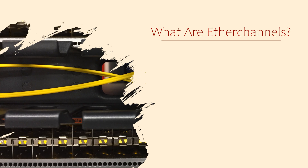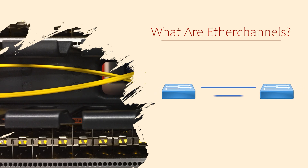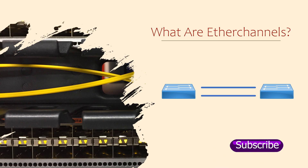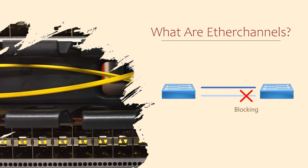We've recently been talking about spanning tree. What would spanning tree do in a case like the one you see here? It would effectively block one link to prevent the loop. But we still need to consider having two links here for redundancy — if one link fails, the other would be available to take over. The second link is basically a backup in case the first link fails. This is good, but it could be better.